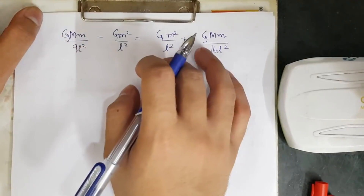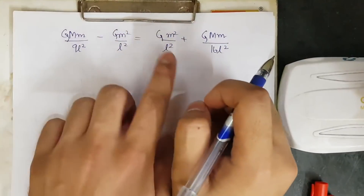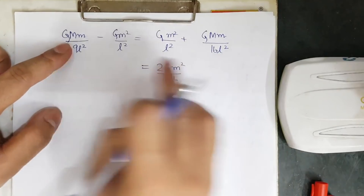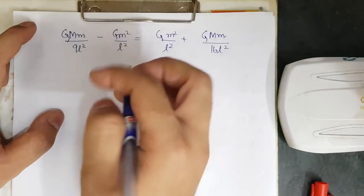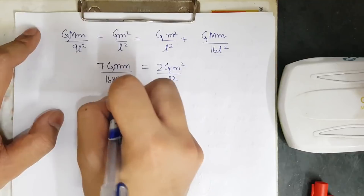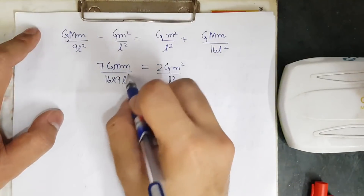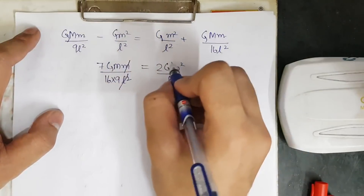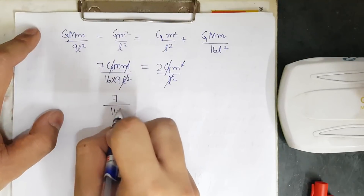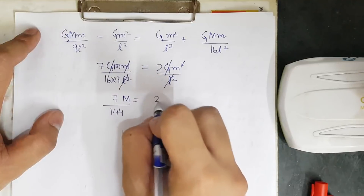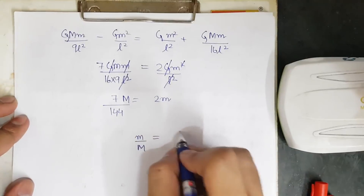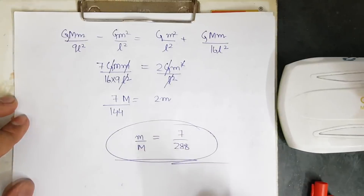Equating both expressions for a and rearranging: 2G·m²/l² = (16−9)·G·M·m / (16·9·l²), which gives 2G·m/l² = 7·G·M/(144·l²). Cancelling G and l² from both sides: 7M/144 = 2m, so m/M = 7/288. This is the required ratio.